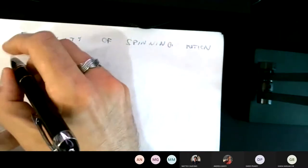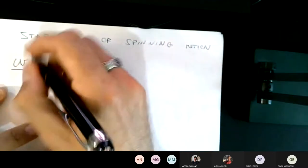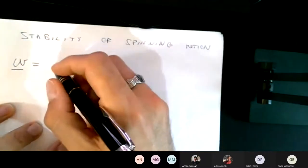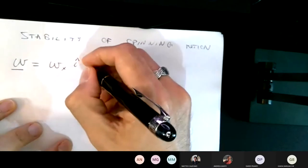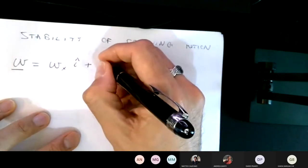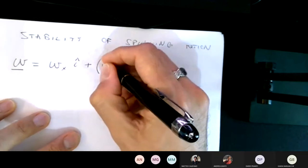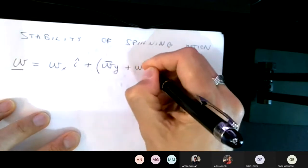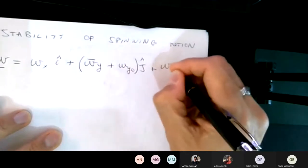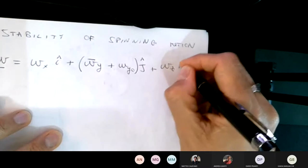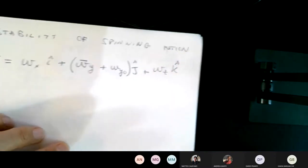Let's say that our spacecraft is doing this. Its angular velocity — and I'm going to drop the unnecessary notation of body with respect to ECI — it's the angular velocity in the body axis. It's some omega_x i, and we understand that this is the i of the body, plus omega_y bar, plus omega_y zero on the j, plus omega_z on the k axis. So this is the angular velocity of my spacecraft in the body axis.